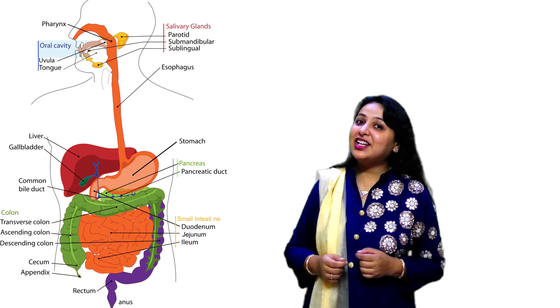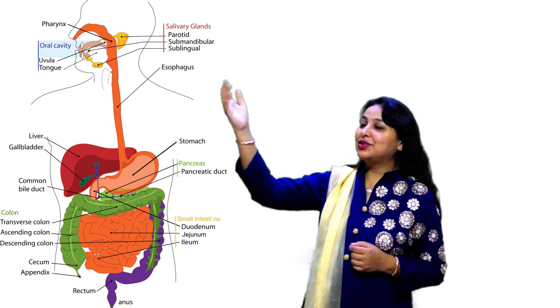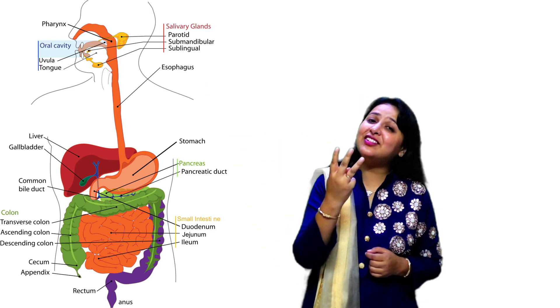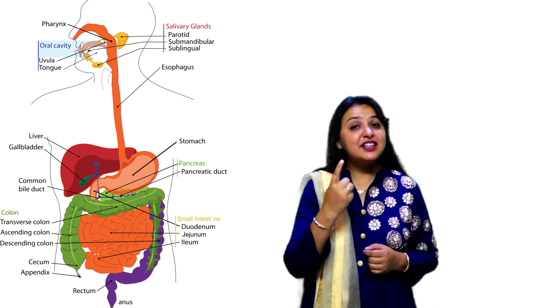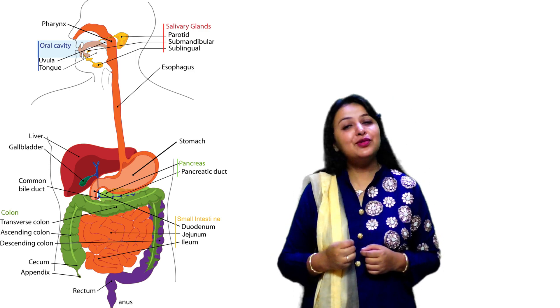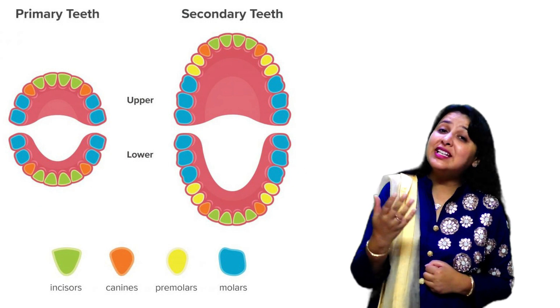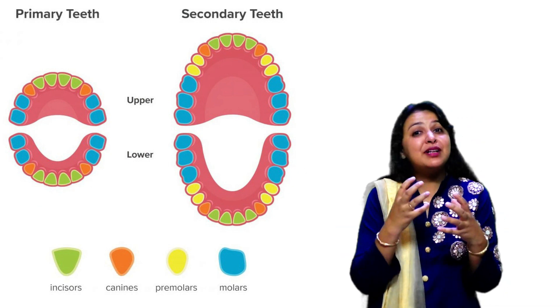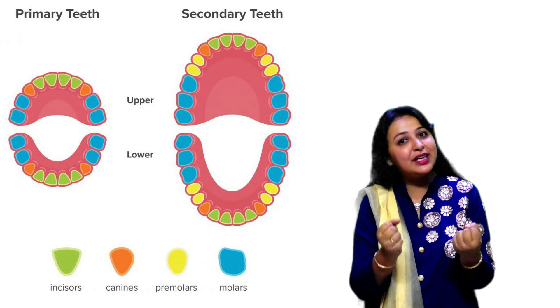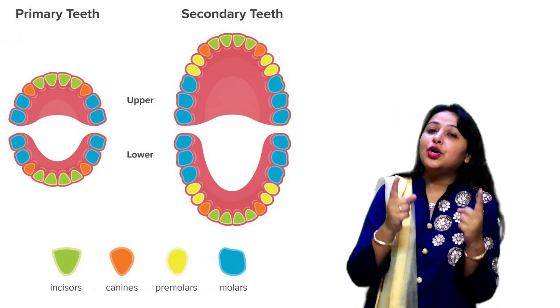Now we are going to study the first part of the alimentary canal, which is the mouth. The mouth has basically three important things. Firstly, about the teeth — we all know that teeth are of so many types in human beings and they perform so many types of functions, for example crushing the food, grinding the food, and chewing the food.